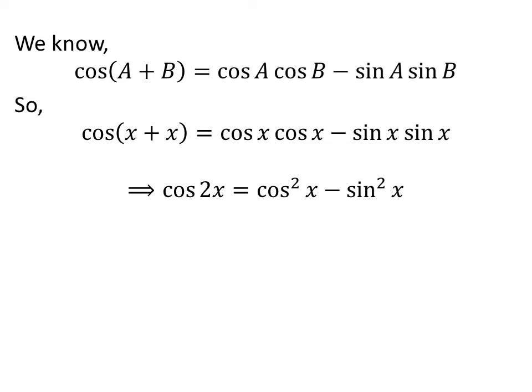x plus x equals 2x, so cos 2x equals cos squared x minus sin squared x.